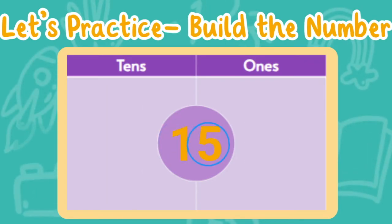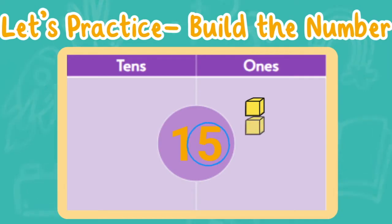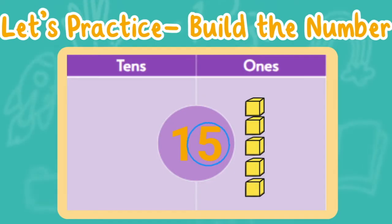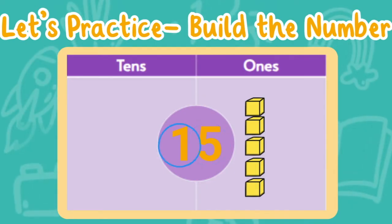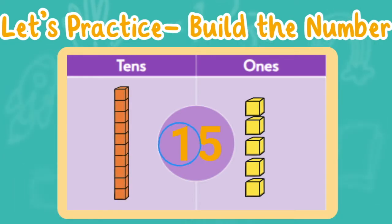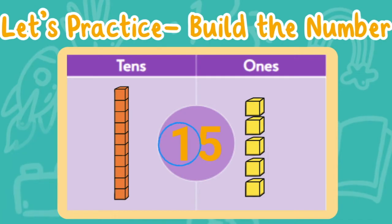Let's build the number 15. Let's look at the ones place first. I see that I have the number five in the ones place, which means I need five ones. Let's count them together: one, two, three, four, five — five ones in the number 15. Now let's look at the tens place. I see I have one ten.